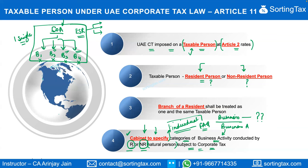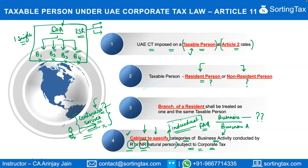One interesting point from the FAQs is that in the case of an individual providing continuous services — even though not under an employment agreement — this income from continuous services may actually be exempt from UAE corporate tax. This is unlike many other countries where services provided under a service agreement (rather than employment) are treated as business income. But the FAQ clearly states that if continuous service amounts to something like employment, that income will also be exempt.